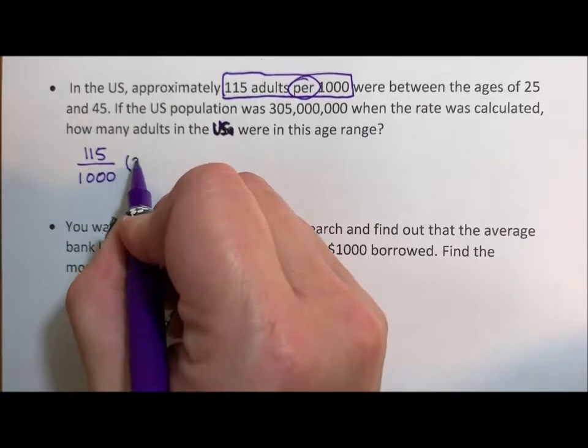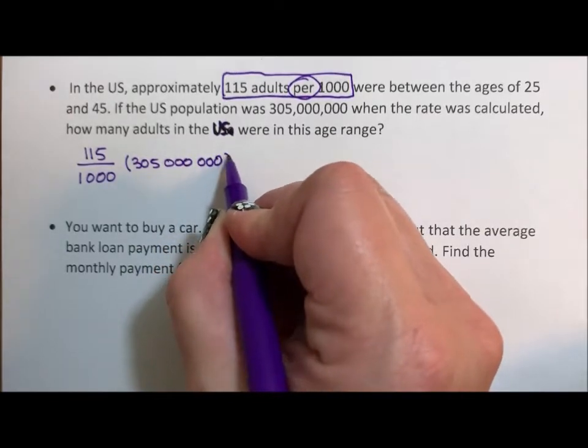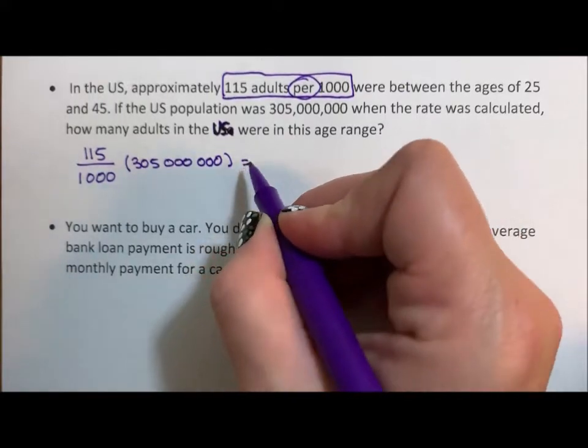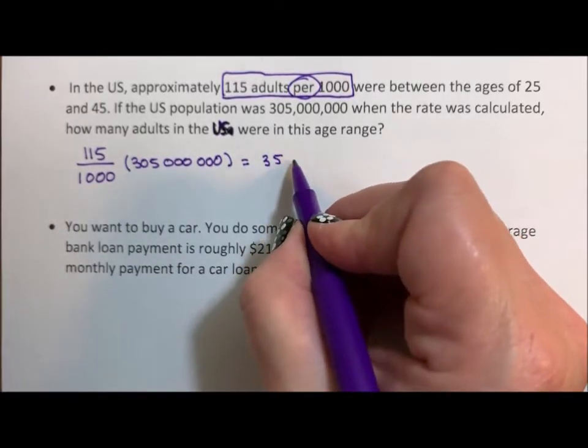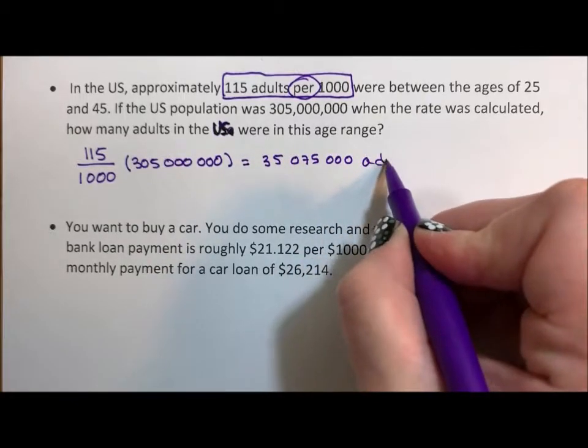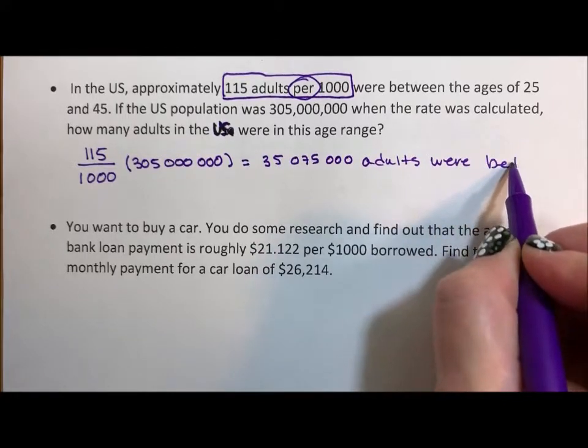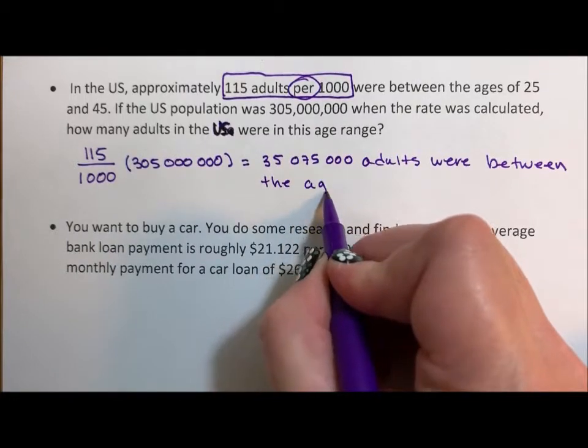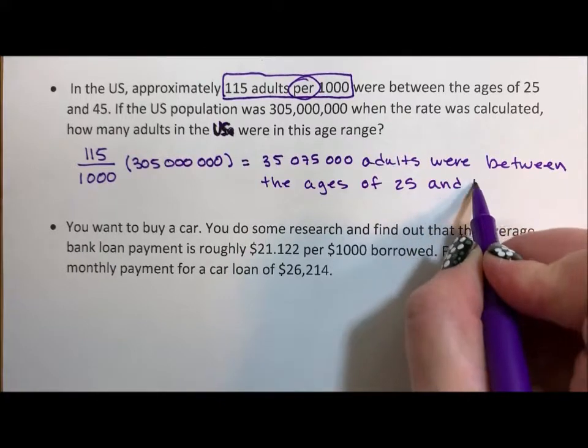So times that 305 million. So if we do that calculation, we get 35,075,000 adults between the ages of 25 and 45.